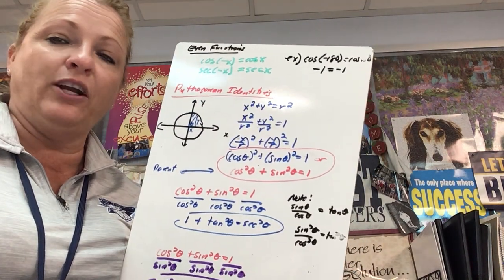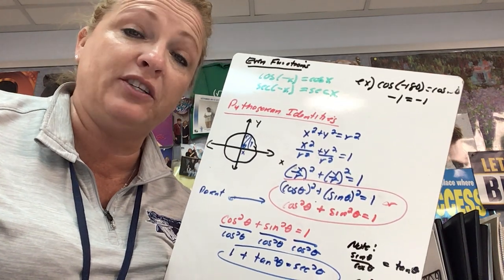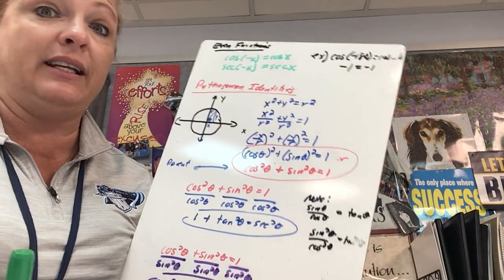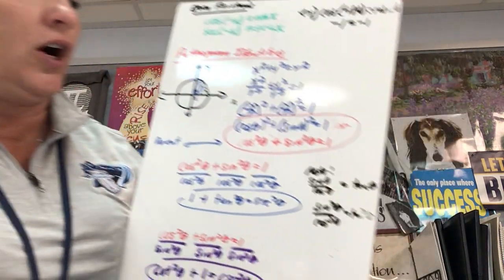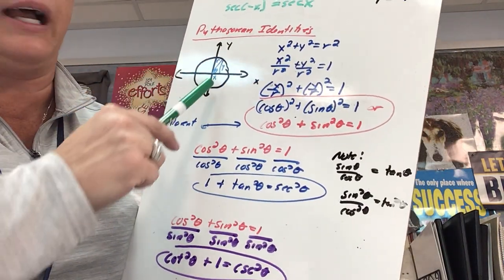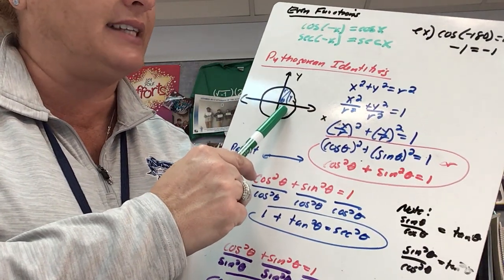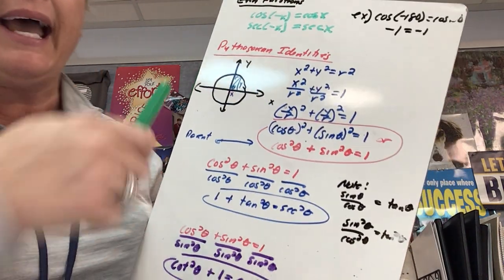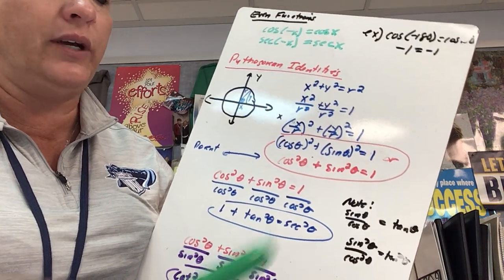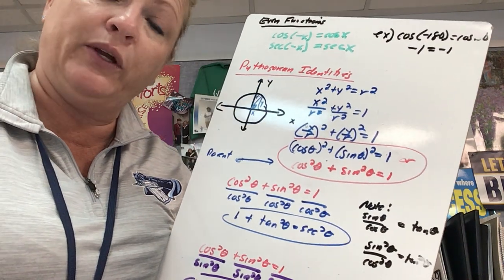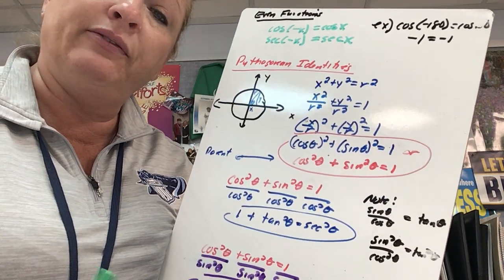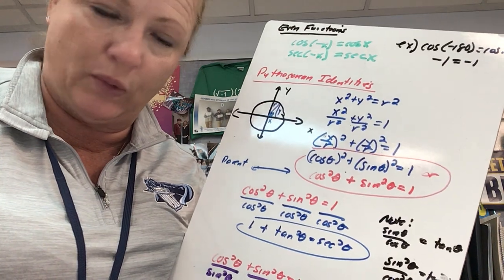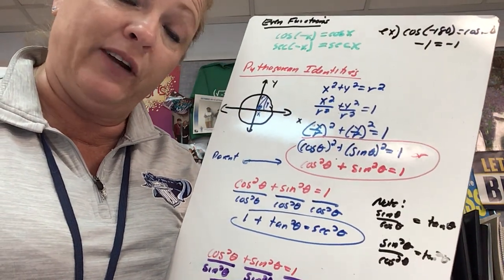Pythagorean identities are very, very, very important — much like quotient and reciprocal identities, these will come up often. Pythagorean identities are based on the Pythagorean theorem; that's why they're called that. In your notes I have a unit circle with a right triangle: horizontal side X, vertical side Y, hypotenuse R. So x² + y² = r². This is an equation, so I can divide all sides by r². What I am doing right now is proving how we derive the parent Pythagorean identity, so you can always go back and figure it out if you've forgotten.